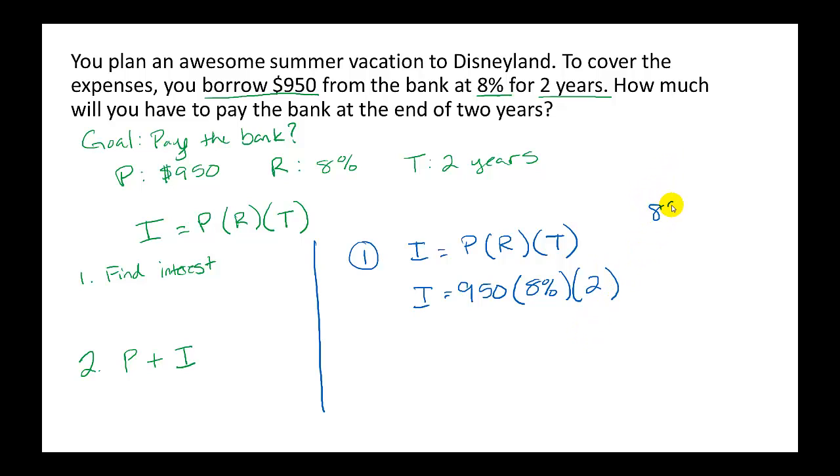Well, 8% becomes a decimal by removing the percent sign, taking a decimal, and moving it 2 places. So this is really 950 times .08 times 2.